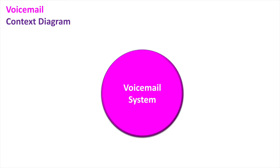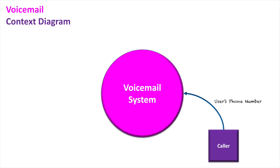So let's first look at this as a context diagram. Here it is — our voicemail system. What we have first is our actual caller, the person trying to ring someone and that person doesn't answer the phone. So if they're ringing someone, they're entering the person's phone number, and obviously the person doesn't answer the phone, so it redirects to the voicemail inbox. Once the voicemail system begins, they hear the user's personal message.